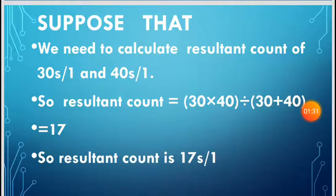Suppose that we need to calculate the resultant count of 30s/1 and 40s/1. So resultant count = (30 × 40) ÷ (30 + 40) = 17. So the resultant count is 17s/1.